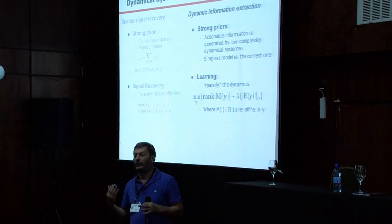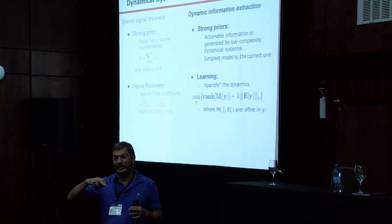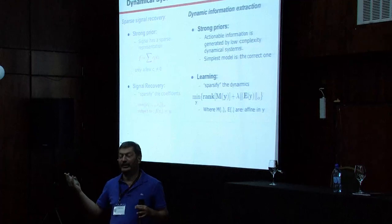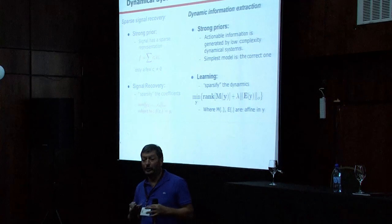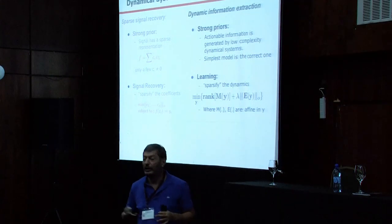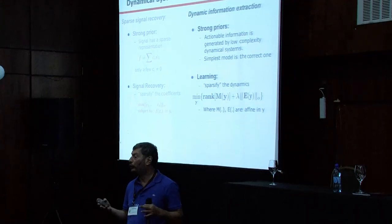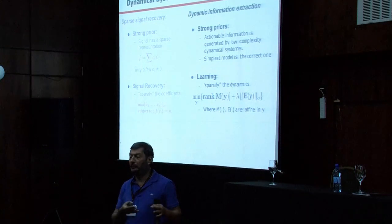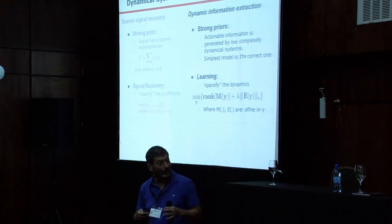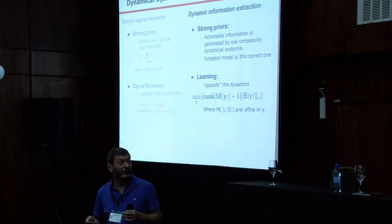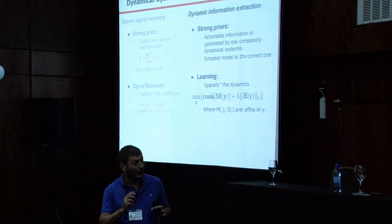You can make a connection with compressive sensing. When I first learned about compressive sensing — that you can get around the Nyquist limit — I thought it was magic. But no, the problem is that it works because you have a very strong prior. I'm going to make a very strong assumption: that the information I care about has been generated by some underlying system, and if I don't know anything about my system, the simplest model — Occam's razor — is the one that's actually probably correct. In that case, learning becomes just an issue of sparsifying your dynamics.